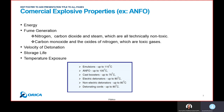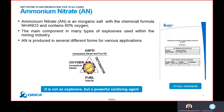Ammonium nitrate is an inorganic salt with a specific chemical formula. It contains 60% oxygen, which is the reason it can supply oxygen for the reaction. That makes it a great element to use in a blast explosion, because the oxygen reacts with the fuel in the chemical reaction. It is the main component in many types of explosives used in the mining industry.